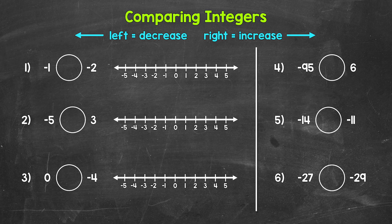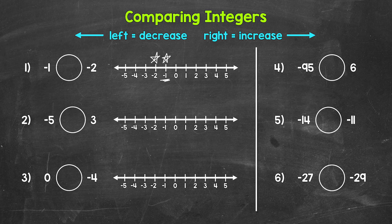Let's jump into number one where we have: negative one is greater than, less than, or equal to negative two. Let's take a look at the number line. Negative one is right here, and negative two is right here. Which integer is further to the right? That means it's going to be greater in value. Negative one is further right, so negative one is greater than negative two. We want the comparison symbol opening up towards the greater value, and we can read this as negative one is greater than negative two.